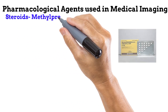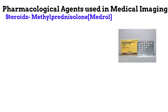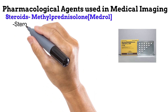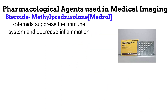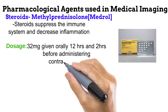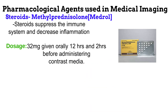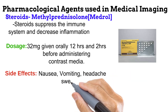Next are steroids. One example is methylprednisolone, commonly marketed as Medrol. It is the immune system that produces the chemicals that mediate contrast media reactions. Steroids are potent immunosuppressants — they suppress the actions of the immune system, preventing many contrast media reactions from happening. Medrol is commonly in tablet form and is administered in two oral 32 mg doses. The first dose is given 12 hours before contrast media is administered, while the second dose is given 2 hours before contrast media. Its side effects include nausea, vomiting, headaches, and sweating.